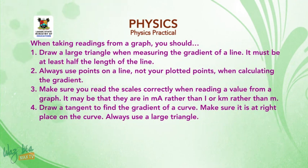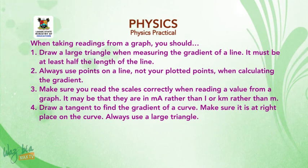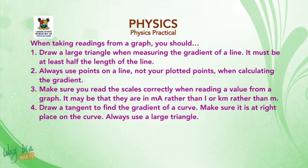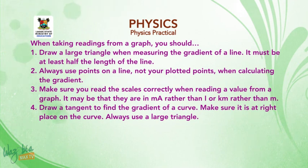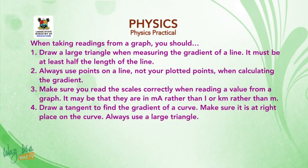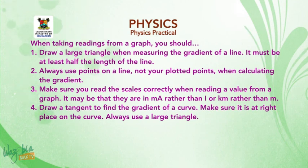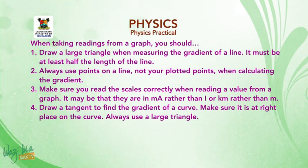When taking readings from the graph: 1. Draw a large triangle when calculating the gradient of a line — it must be at least half the length of the line. 2. Always use a point on the line, not your plotted point, when calculating the gradient. 3. Make sure you read the scale correctly when reading a value from a graph — it may be in milliamperes rather than amperes, or kilometres rather than metres. 4. Draw a tangent to find the gradient of a curve; make sure it is at a right angle on the curve, and always use a large triangle.